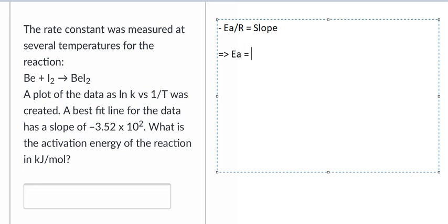We move R to the other side, so Ea = -R × slope. R is 8.314 and the slope is the given number in the question.